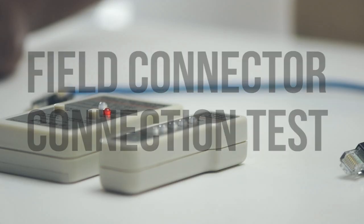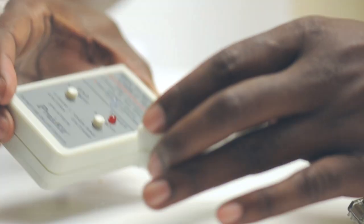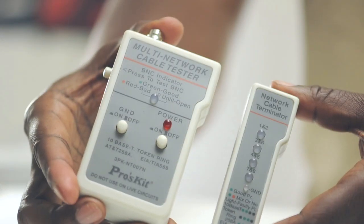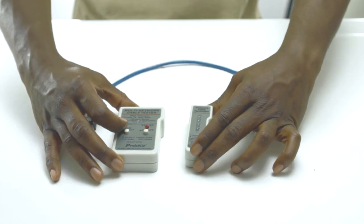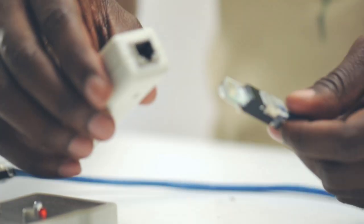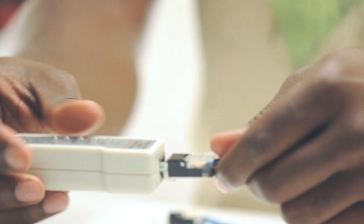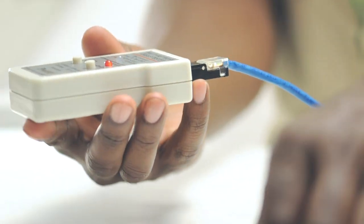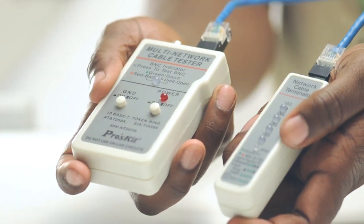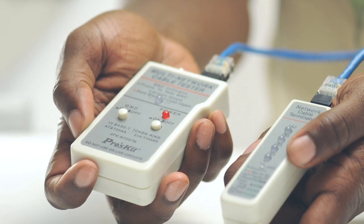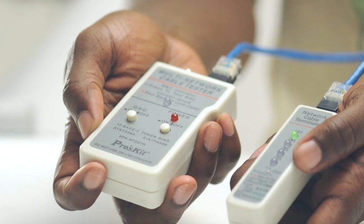The last thing I need to do is test my cable. Plugging the RJ45 connectors into the ports on the tester allows me to make sure that the patch cable functions properly. And as you can see from the green lights we have a successfully made and tested cable.